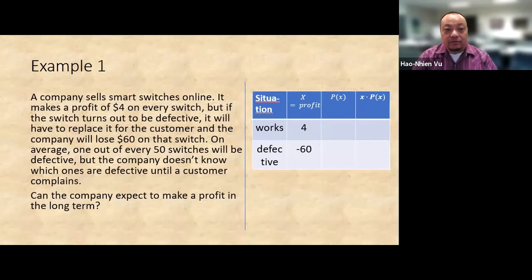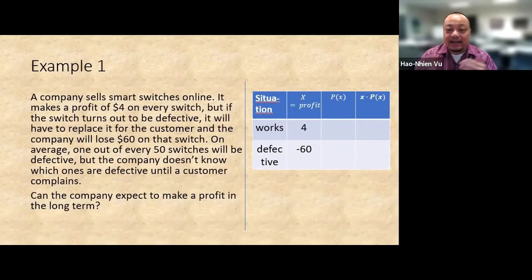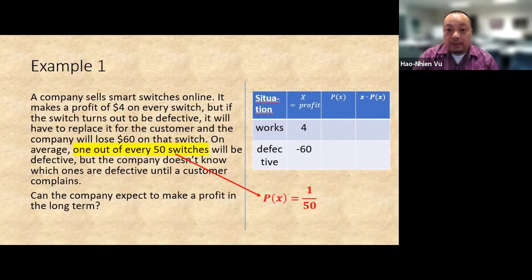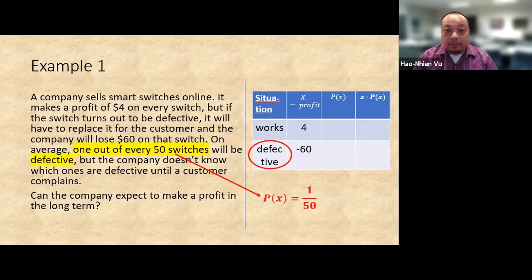Now fill in the blanks for the probabilities p of x. Read through the problem and look for where it says anything that sounds like a probability. Here's something: one out of every fifty switches. That's a probability of one over fifty. But where do we put it? This is where the first column becomes helpful. One out of fifty switches will be defective. That means the probability of one over fifty should go under defective like this.